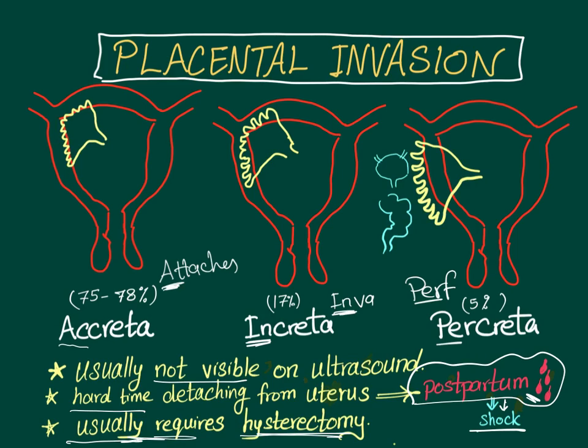Also note that placenta percreta can cause problems to the urinary bladder, resulting in urinary symptoms, as well as GI or stool symptoms. To summarize: placental invasions — accreta, increta, percreta — attached, invades, perforates.